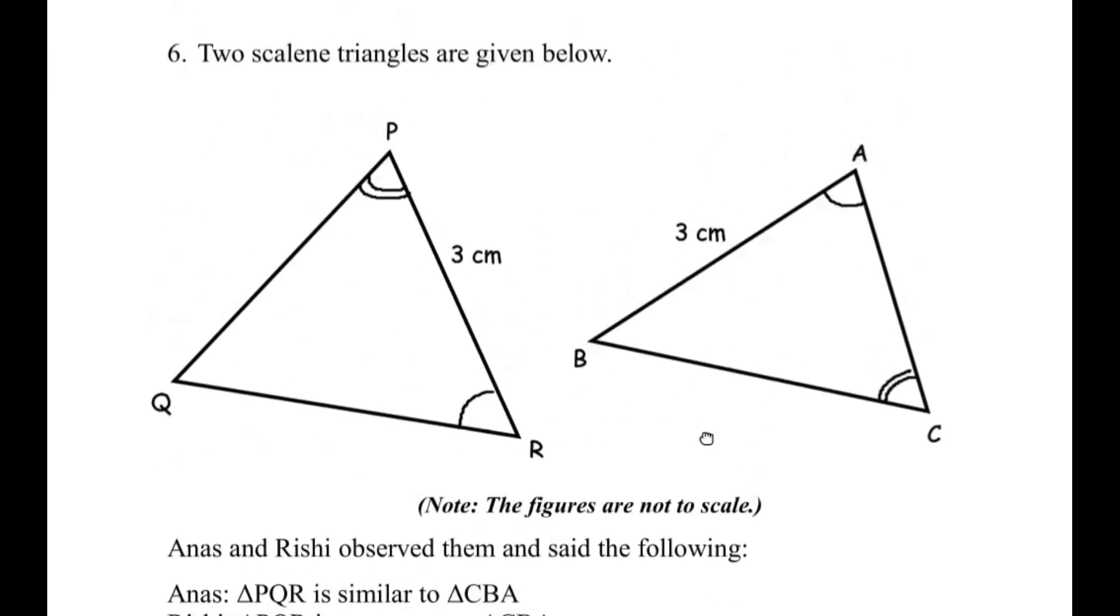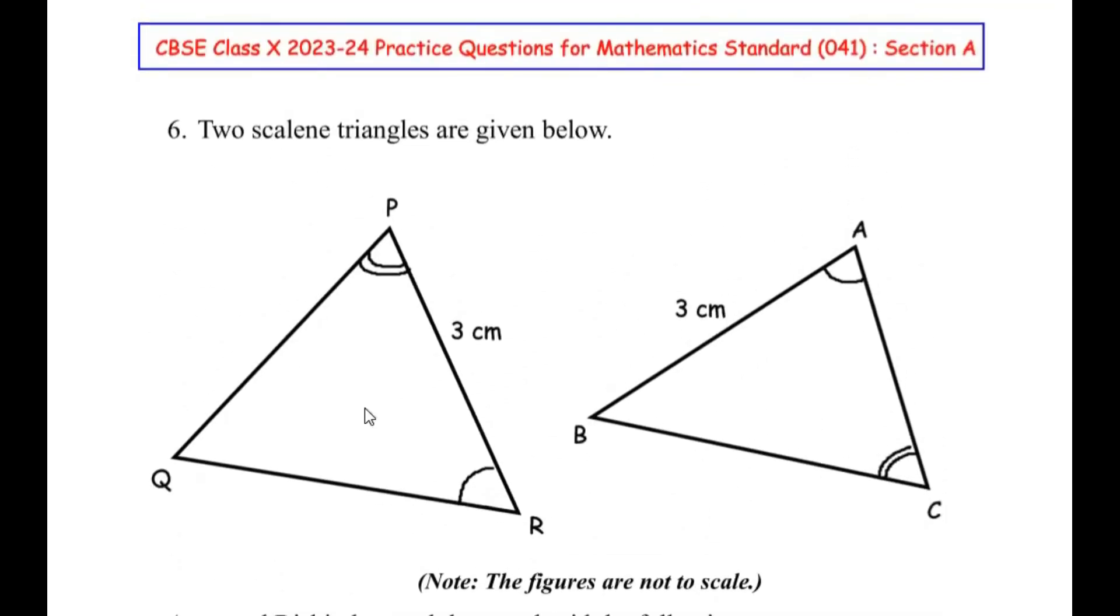So let us first understand what are scalene triangles. Scalene triangles have different angles. For example if this is 70 degrees this is going to be 50 and this is going to be 60 degrees. All the angles will add up to 180 degrees but none of the two or three angles are going to be same. Similarly all the three sides are also going to be non-similar. So if this is 3 cm this is going to be for example 6 cm and this is going to be 2 cm. So this is the property of scalene triangles.